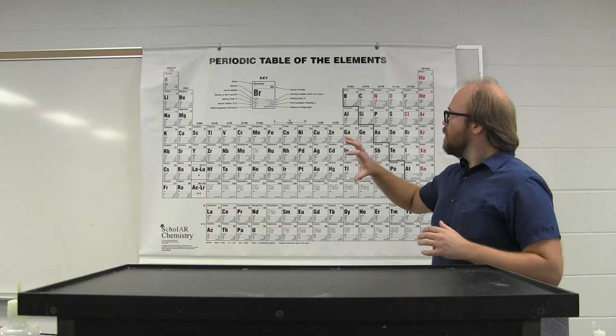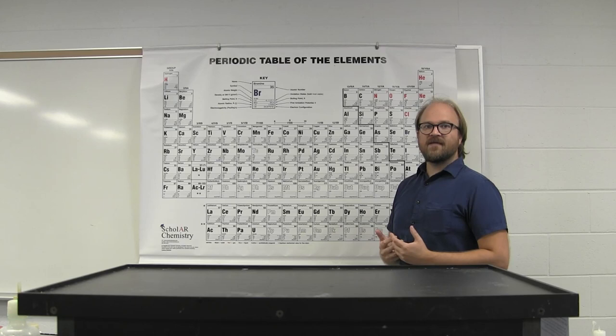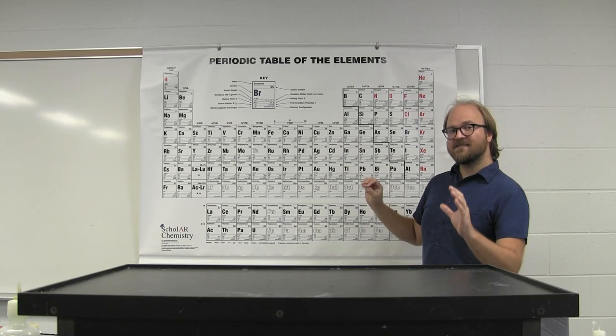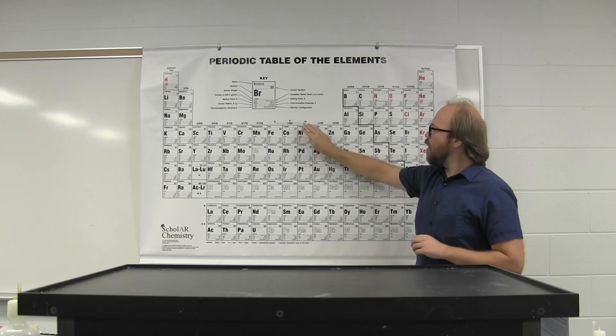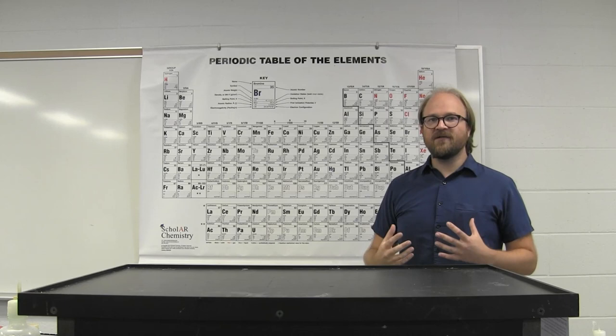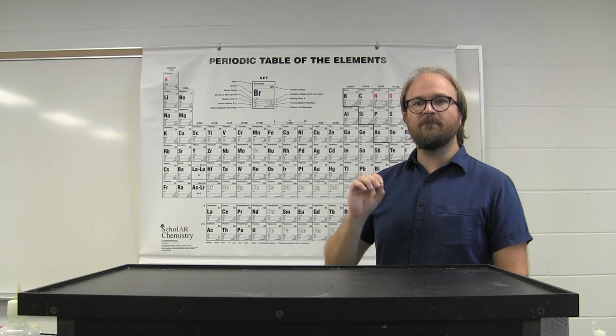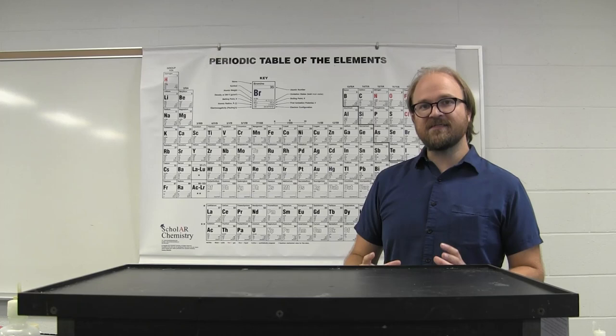Where an element is on the periodic table describes the individual last electron associated with that particular element. All of the preceding electrons also have unique individual energies, and the electron configuration can pinpoint what that unique energy is based on its position in the periodic table.